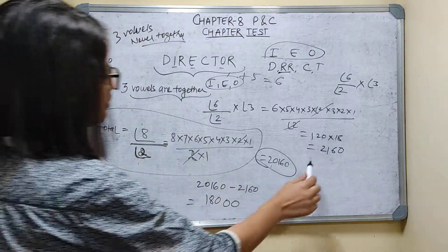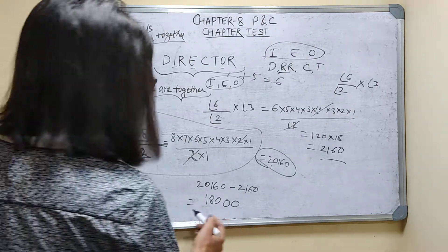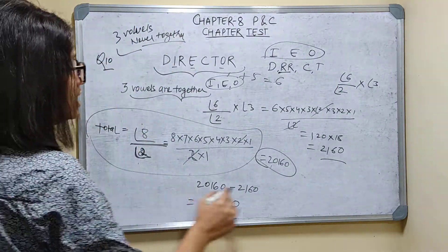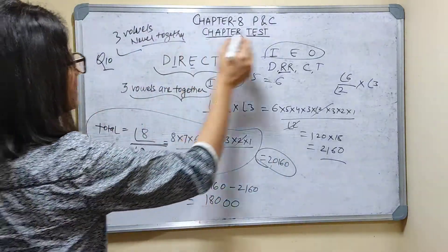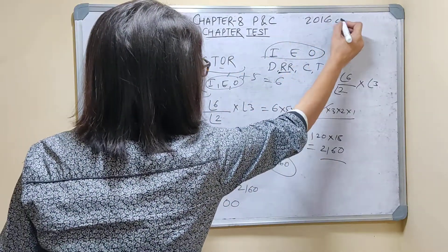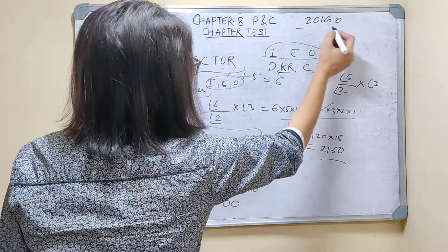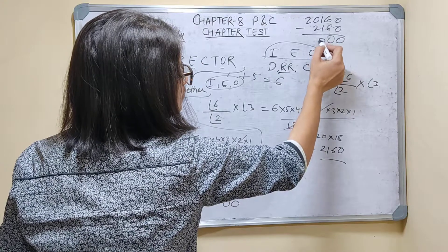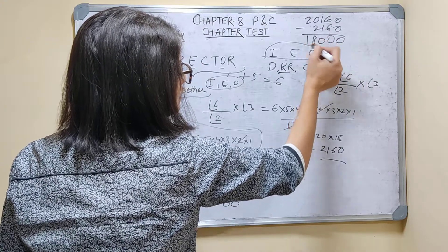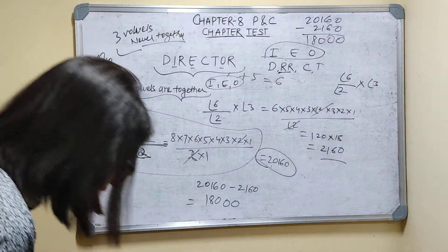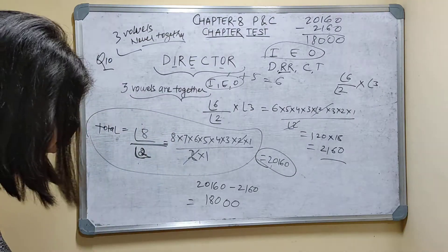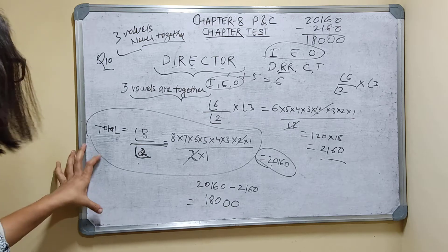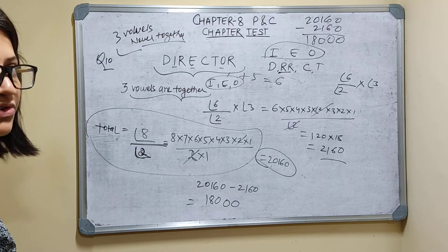When you make total arrangements with all eight letters you get 20,160. When three vowels are together you get 2,160. So the arrangements when three vowels are never together = 20,160 − 2,160 = 18,000. So 18,000 ways the letters of the word DIRECTOR can be arranged so that all the three vowels are never together. Thank you.